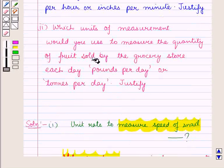Now let us start with the second part. In the second part we have to find the unit rate to measure the quantity of fruit sold by the grocery store each day.